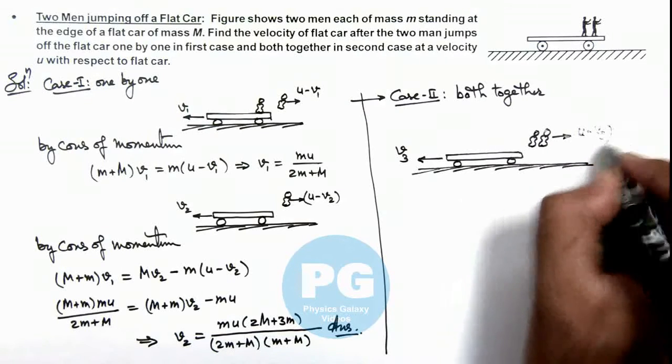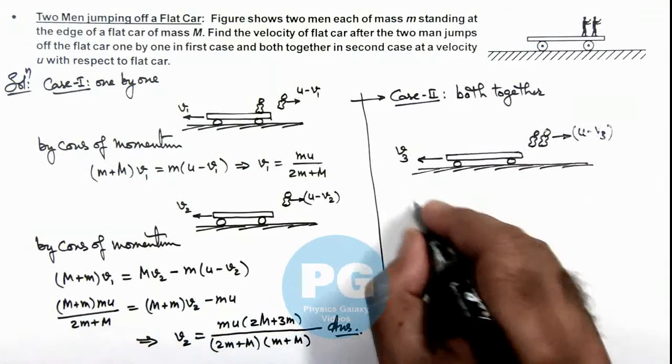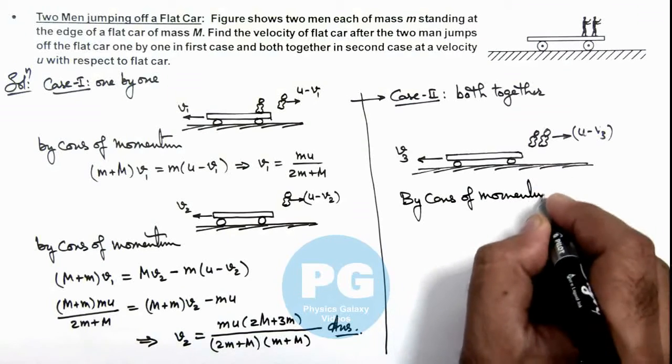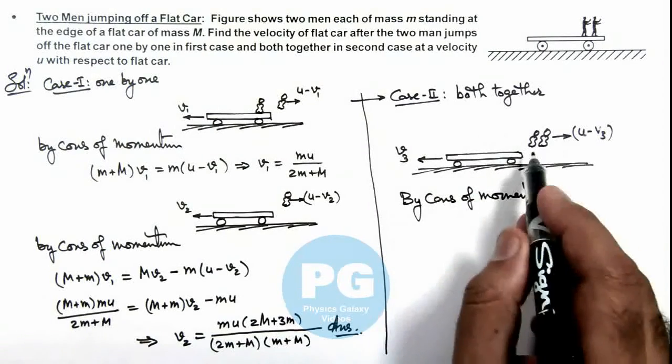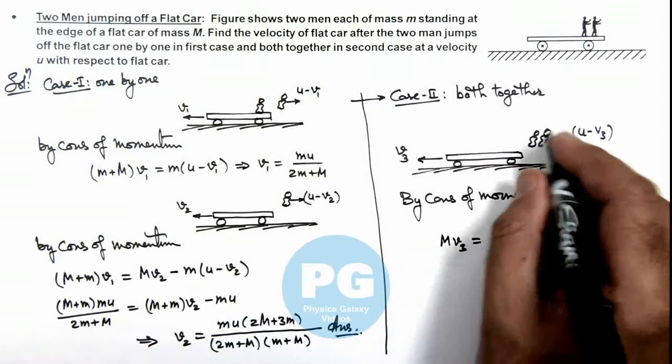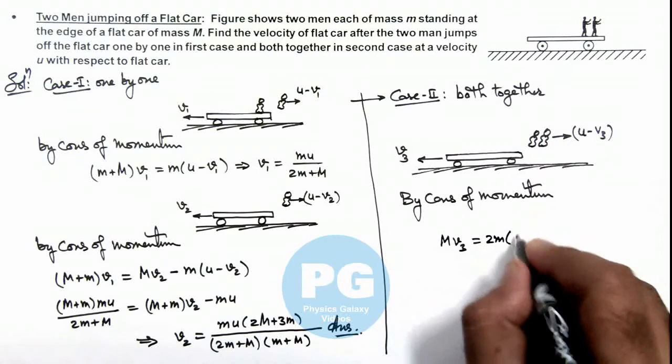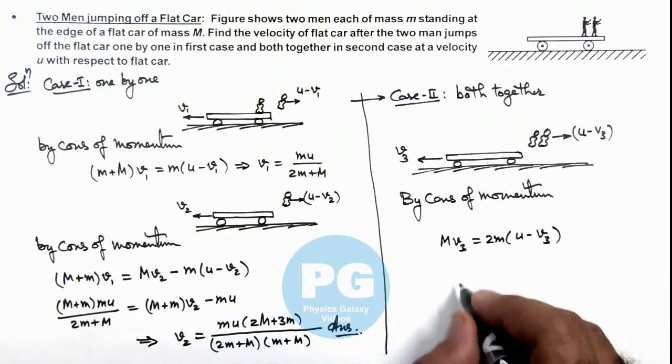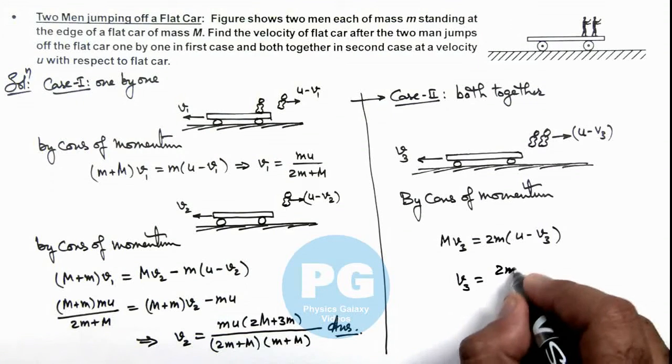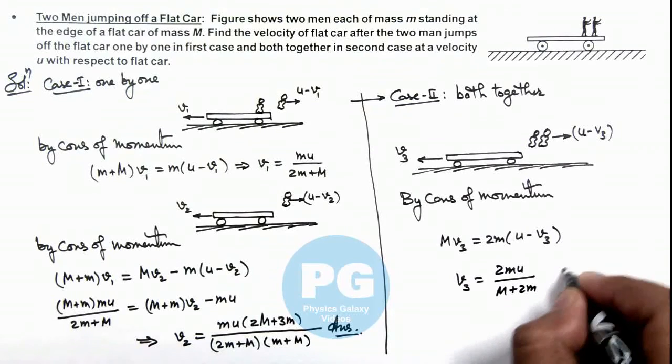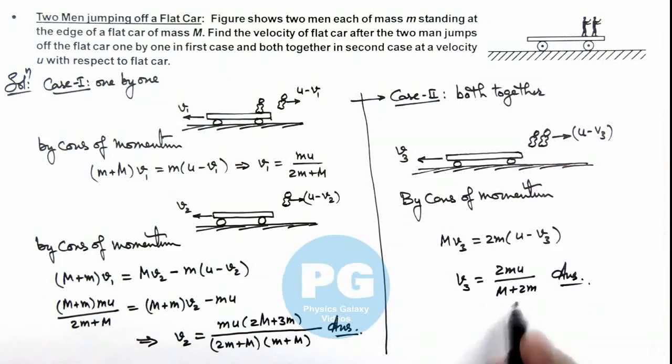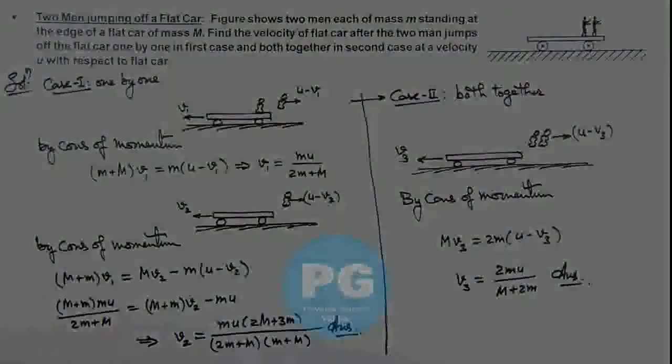So again we can write by conservation of momentum, initial momentum of the system was zero. So the car has attained a momentum Mv3, and this should be equal to the momentum of the boys, which is 2m multiplied by (u - v3). On solving this, we get the value of v3 is equal to 2mu divided by (M + 2m). That is the result of this problem when the two boys jump together, the car will attain this velocity. Thank you.